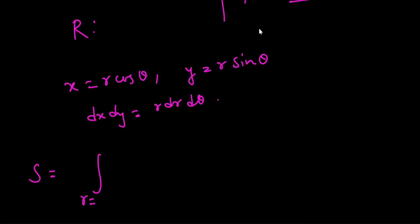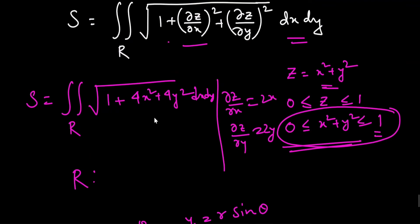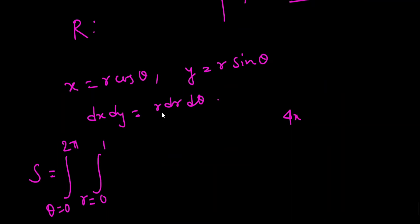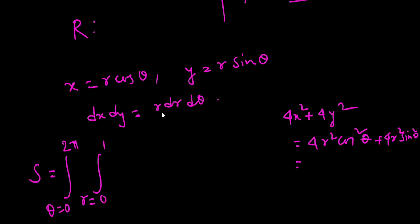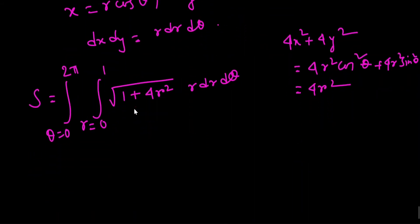The limits are: since the region is a circular disk with radius 1, r goes from 0 to 1 and θ goes from 0 to 2π. Substituting, 4x² + 4y² = 4r²cos²θ + 4r²sin²θ = 4r². So the integral becomes: double integral of √(1 + 4r²) · r dr dθ.